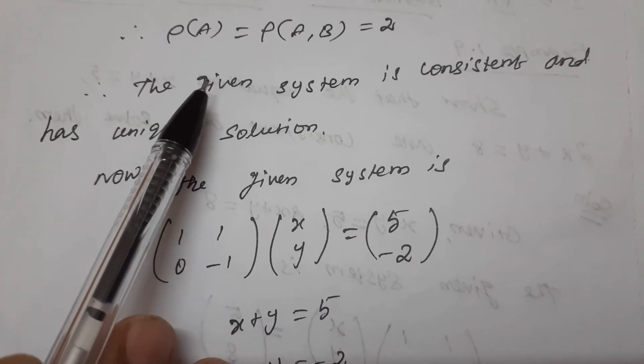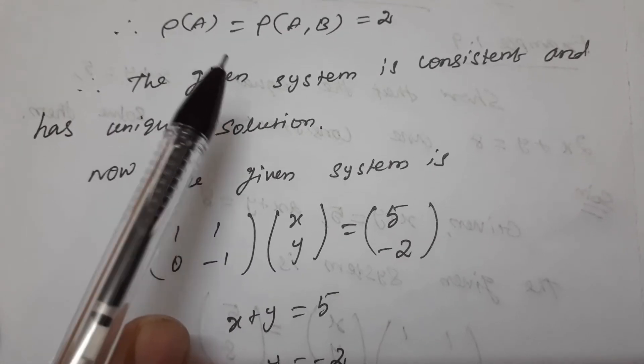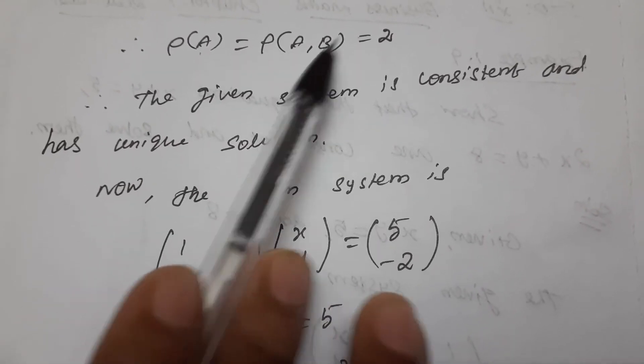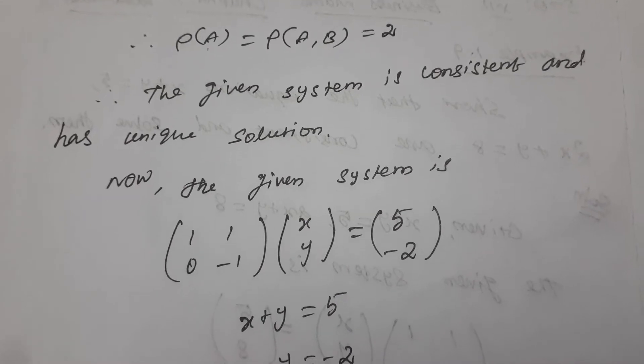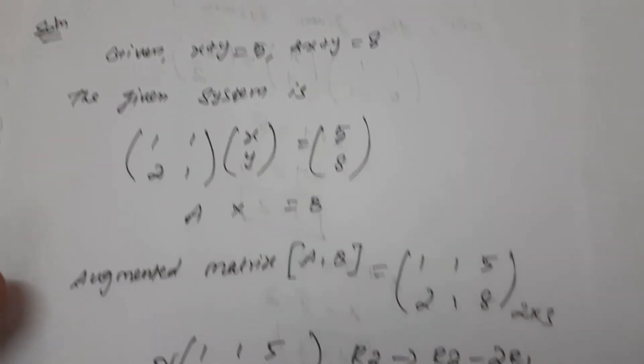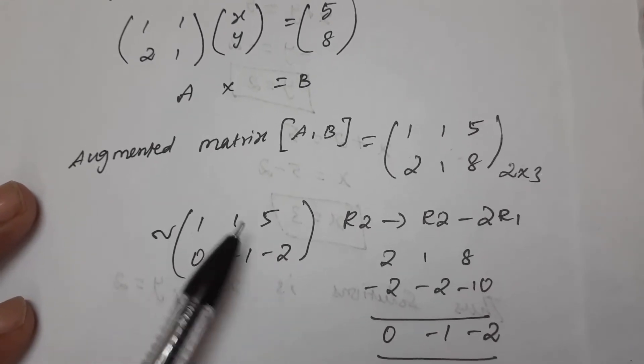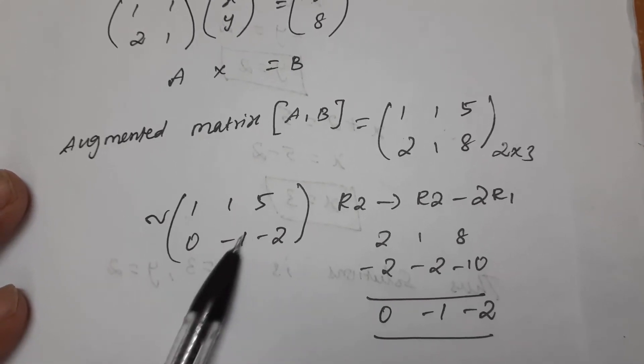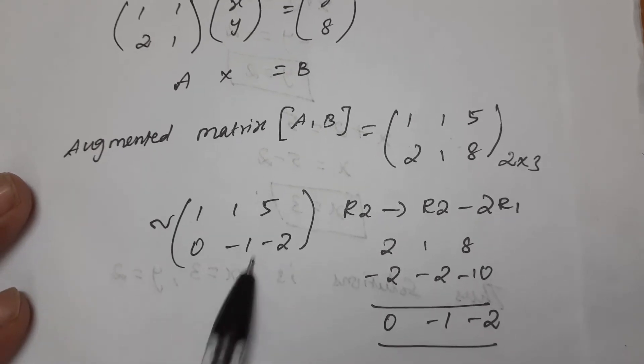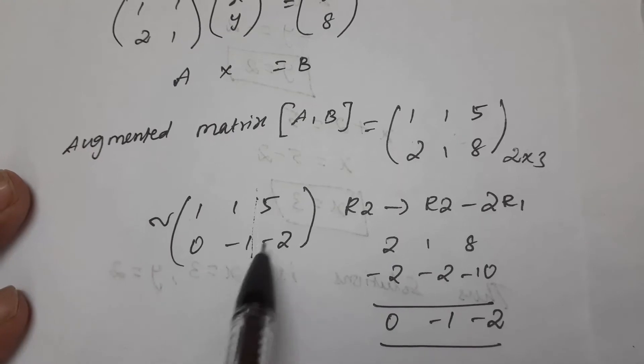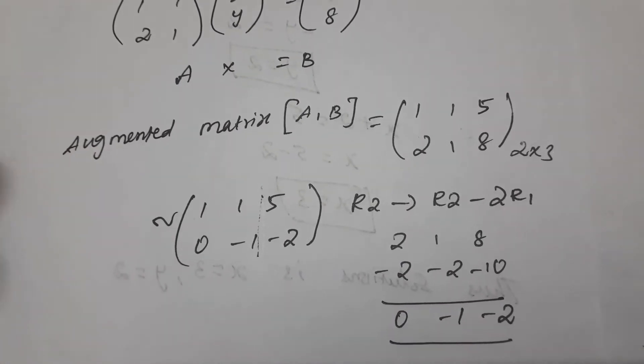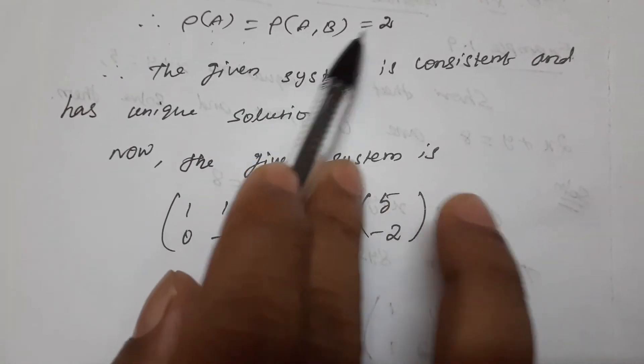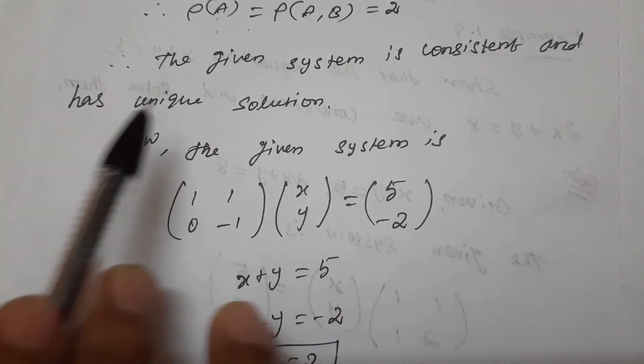So the rank of A is equal to rank of AB is equal to 2. The given system is consistent and has a unique solution.